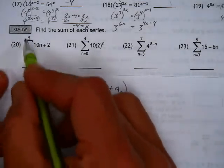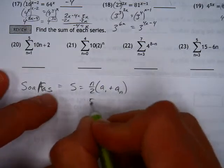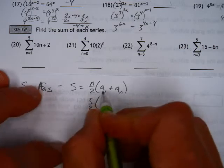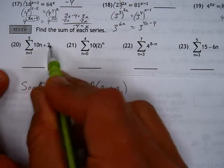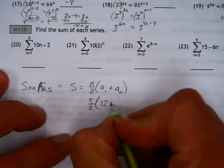So in this case here, there's five terms from 1 to 5, so I've got a 5 over 2. The first term you find by plugging in 1 into the equation. Plug in 1, you get a 10 plus 2 is 12. So 12 is the first term.